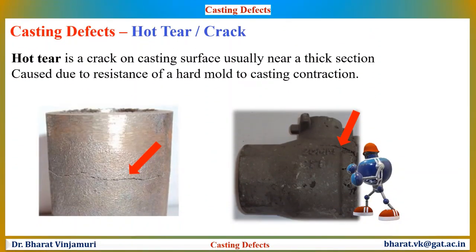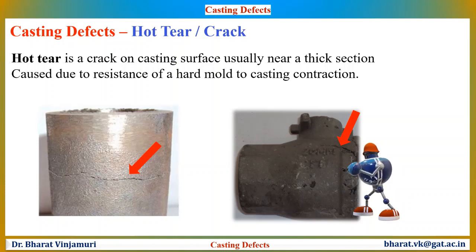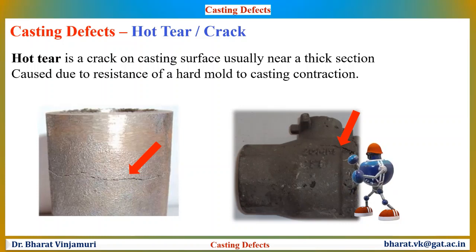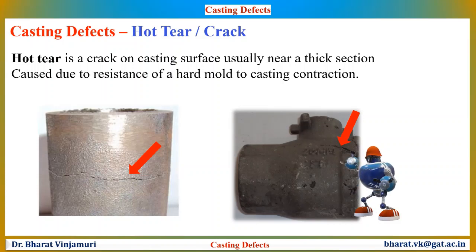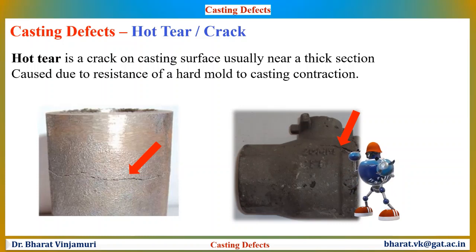Hot tears is a crack on the casting surface, usually near the thicker sections of the casting. It is caused by resistance of a hard mould to casting contraction. If the solidifying metal does not have enough strength to resist tensile forces during solidification, hot tears will appear. Hot tears are mostly caused by poor mould design, and modifying the mould to improve collapsibility can easily resolve these issues.